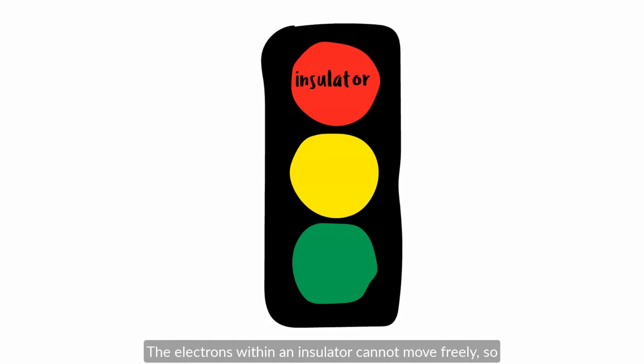The electrons within an insulator cannot move freely, so electricity does not flow through them. In a conductor, electrons do move freely, allowing for free-flowing electricity. Semiconductors fall somewhere in between.